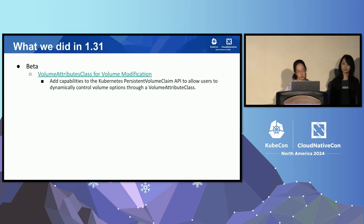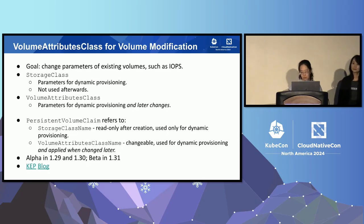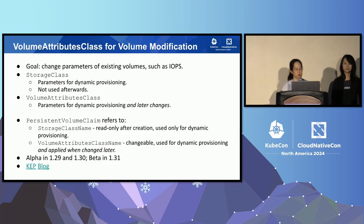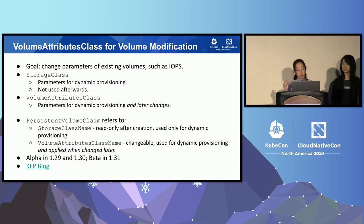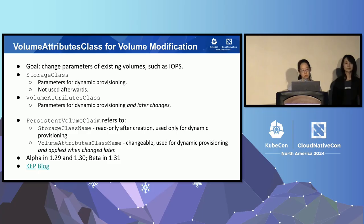Moving on to 1.31, one of the main features we promoted to beta is the ability to modify existing volumes, to support use cases like tuning performance parameters on PVCs after they're created. We've added a new object called volume attributes class — it's similar in concept to a storage class. However, the biggest difference is that storage class is only used for dynamic provisioning, whereas you can actually change the volume attributes class after a PVC has been created. There's a new field in the PVC object called volume attributes class name, and the CSI driver will actually go and change the underlying volume to the new class.